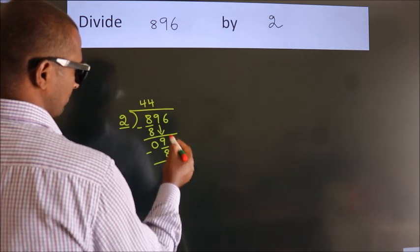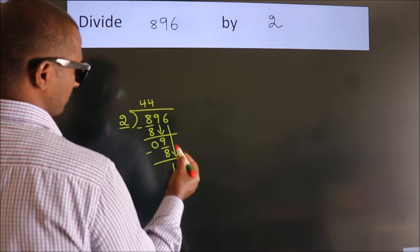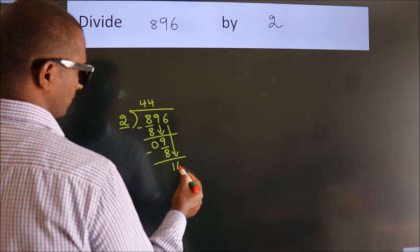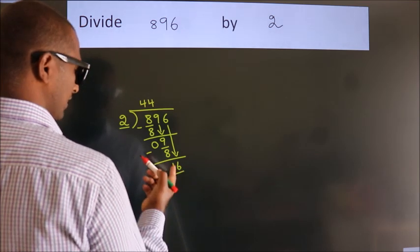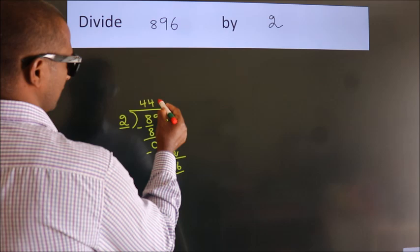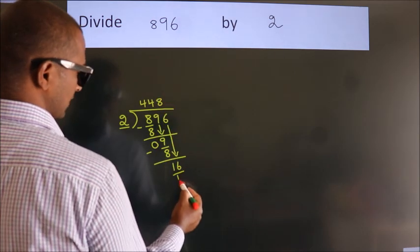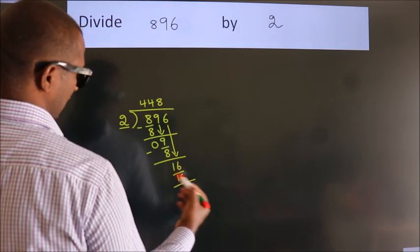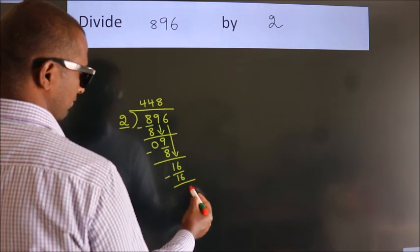After this, bring down the beside number. So 6 down. So 16. When do we get 16 in 2 table? 2 eights, 16. Now we subtract. We get 0.